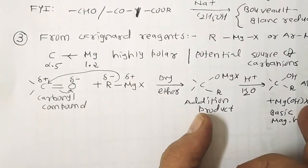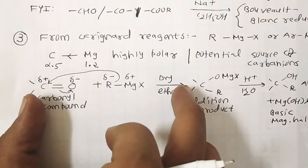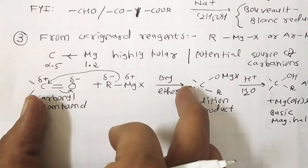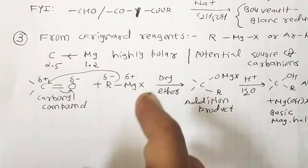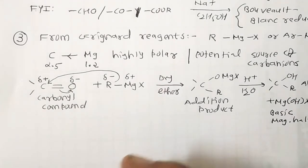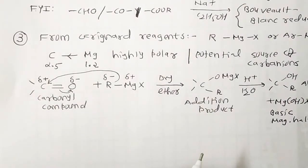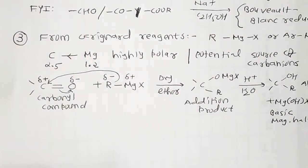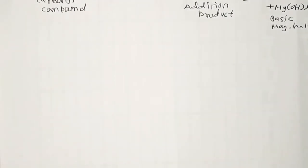So the first step is nucleophilic addition to give an addition product (adduct), and the second step involves hydrolysis of the adduct with water or preferably with dilute hydrochloric acid or dilute H₂SO₄ solution to form an alcohol.